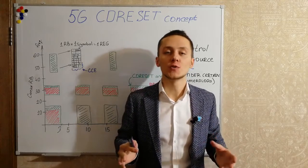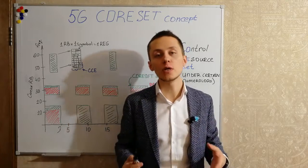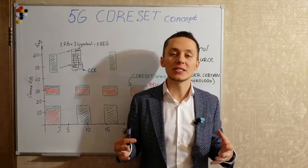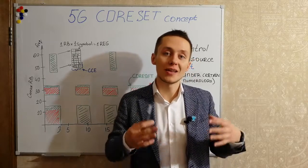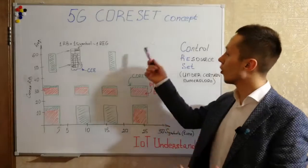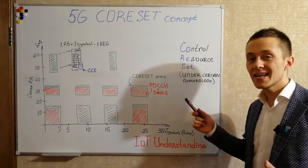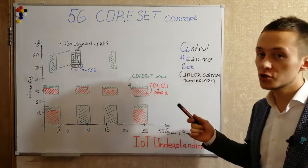As for today, we're going to talk about downlink control information in 5G. We're going to talk about PDCCH allocation and mapping and the core set idea. The core set is a control resource set with a certain numerology.